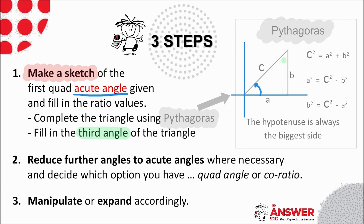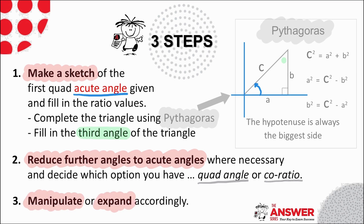The next step is to look at the part questions and see where you can reduce angles to acute angles. Once you've done this using quad angles, you can then decide if you need to still apply co-ratios to get your situation to be in terms of the acute angle in the original question. Your final step is to manipulate or expand the expression, depending on what the question is asking. Be sure to read your question to double-check you're giving the answer in the way they have asked for.